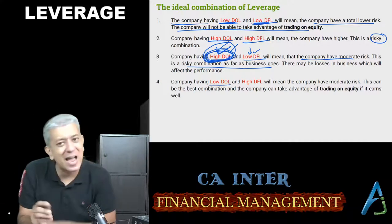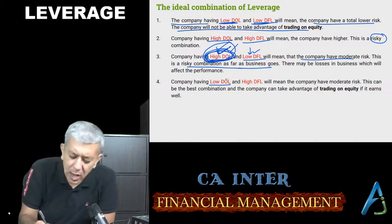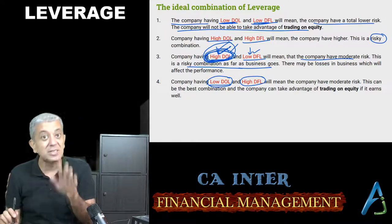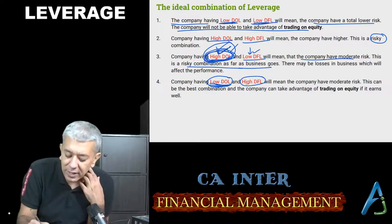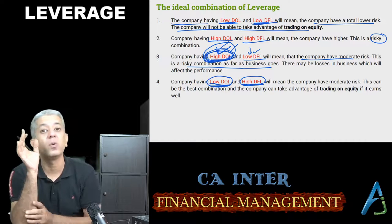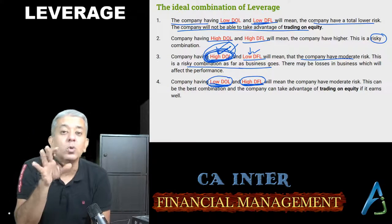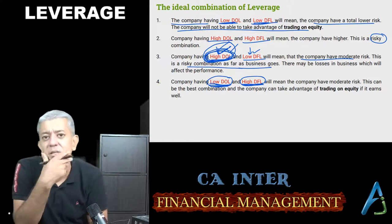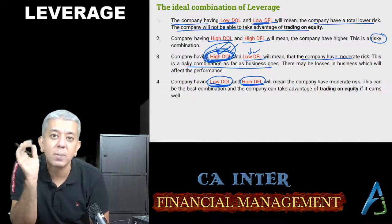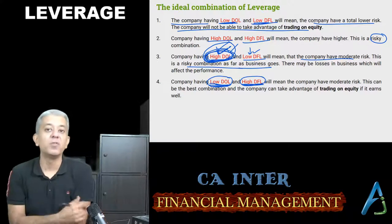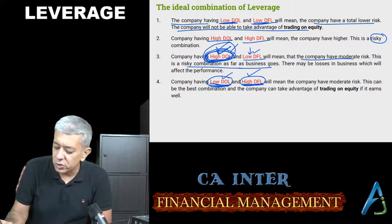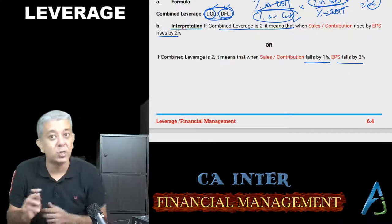As per the institute, the best combination might be low DOL and high DFL. Business ke andar jo log kama rahe hain, usmein risk kam hai — lekin debt and preference shares kaafi hain. Agar aisa hoga, equity shareholders will be benefited a lot due to the presence of debentures and preference shareholders — unka cost kam hota hai, so profit for equity will always be higher. So as per the institute, this kind of combination should be good for every company. This was your recap of entire leverage.